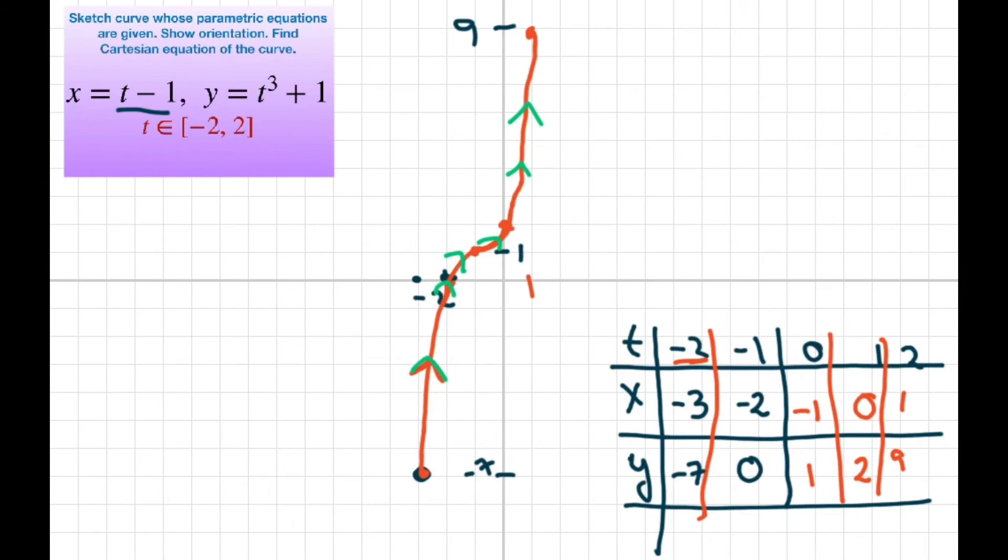Alright, and next we have to find the Cartesian equation of the curve. So let's do that. We know that y equals t cubed plus 1. So I'm going to solve for t here. t is going to equal x plus 1. So just substitute in your t here.